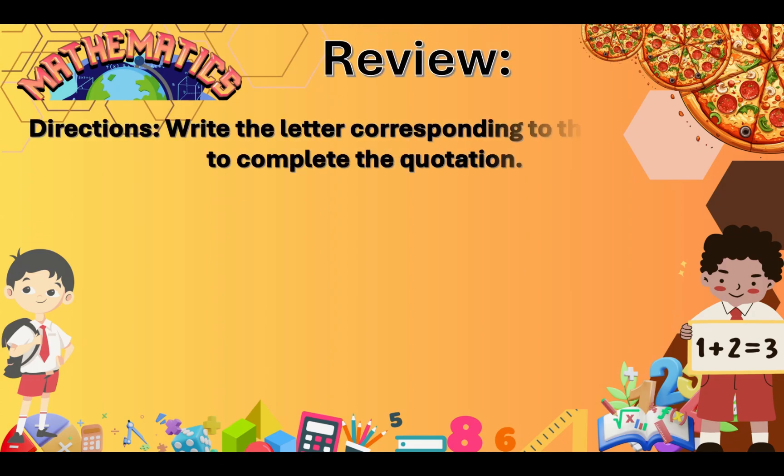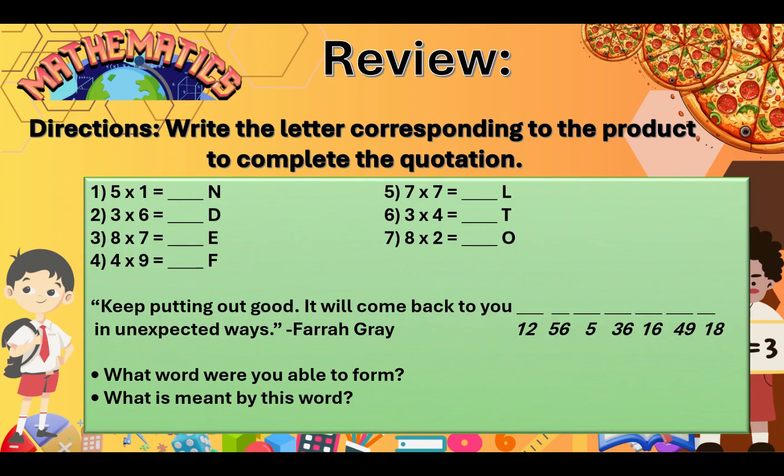Review. Directions: write the letter corresponding to the product to complete the quotation. Number 1, 5 times 1 equals N. Number 2, 3 times 6 equals D. Number 3, 8 times 7 equals E. Number 4, 4 times 9 equals F. Number 5, 7 times 7 equals L.